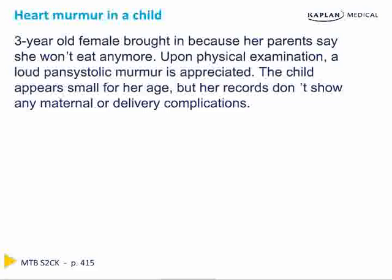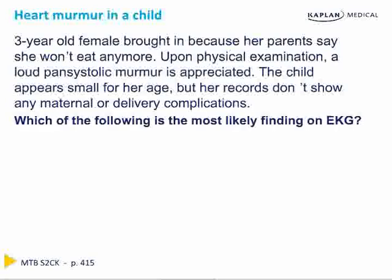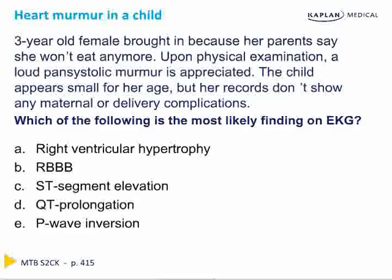To start this section, let's go through a vignette. A three-year-old female is brought in because her parents say she won't eat anymore. Upon physical examination, a loud pansystolic murmur is appreciated. The child appears small for her age, but her records don't show any maternal or delivery complications. We're asked: which of the following is the most likely finding on EKG? This is a great question because it introduces a commonly tested topic while showing the versatility with which they can test that topic.